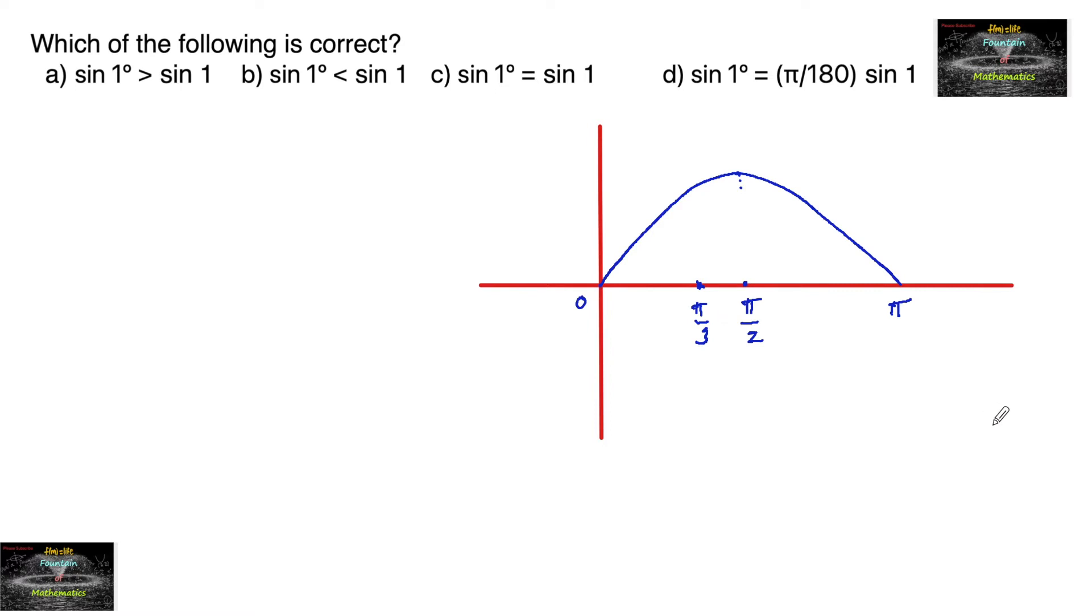Since we know π is approximately 3.14, so this is 3.14 radians, and π/2 can be taken as 1.5 radians approximately, and π/3 we can write as 1.04 approximately. So 1 radian will be here.